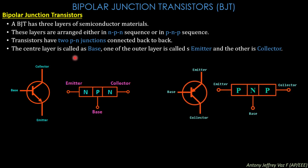The center layer is called the base — the P terminal in the center is the base. The outer layers are called the emitter and collector. This applies to both NPN and PNP transistors: the center terminal is the base, and the other two terminals are the emitter and collector.